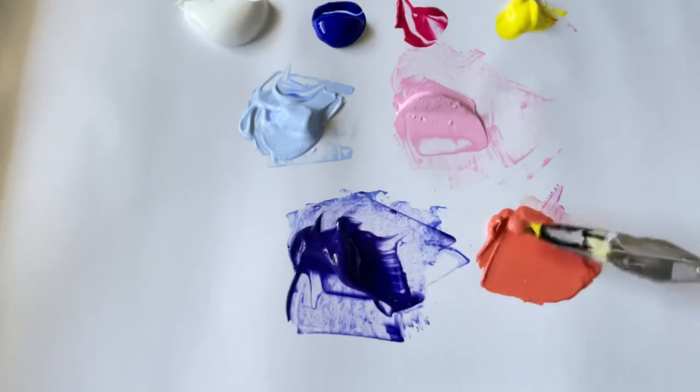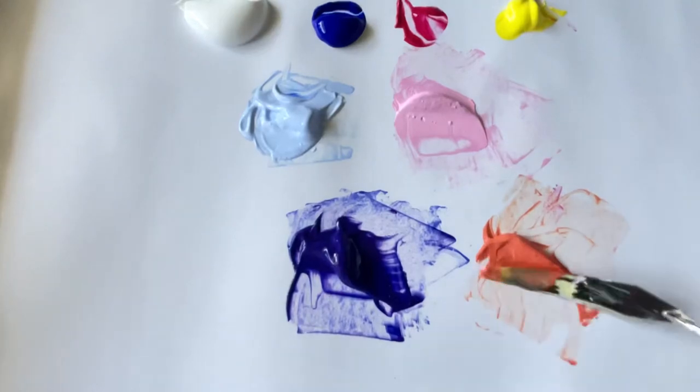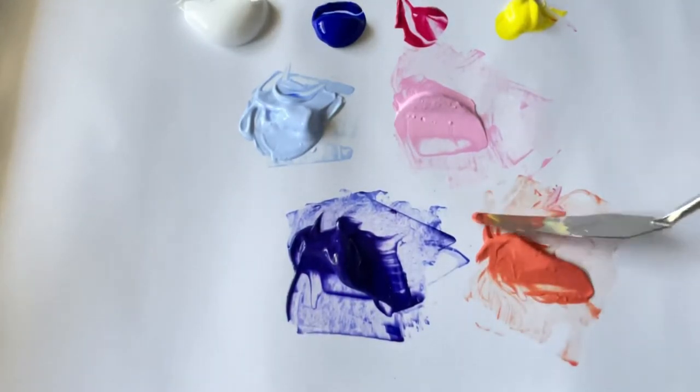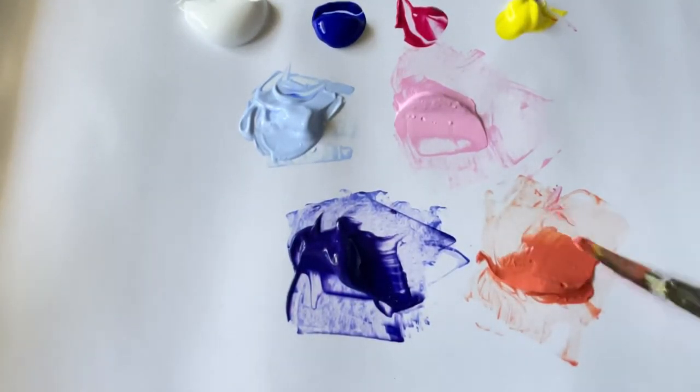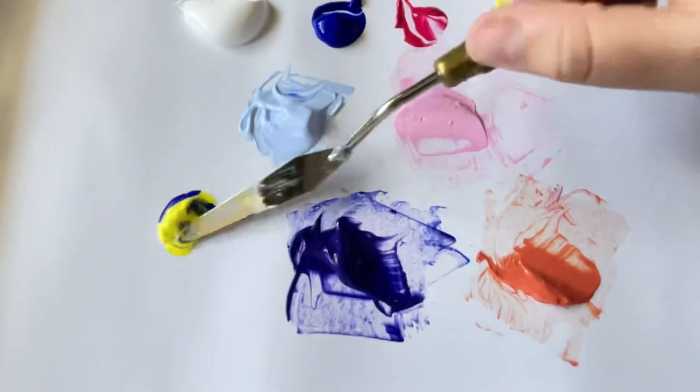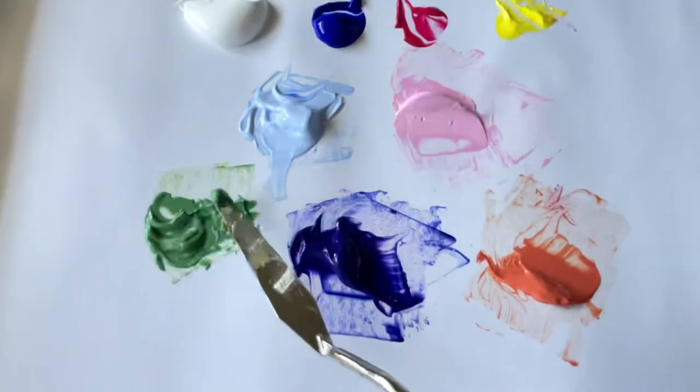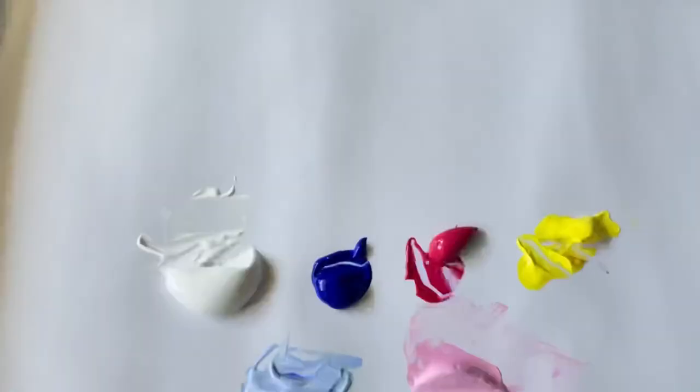Now I'm mixing a rust color or an orange color just by using a little bit of red and a lot of the yellow. Now to be specific, I'm using a permanent rose color, but I would recommend using a quinacridone red, and I'm using cadmium yellow. And now I'm going to mix some green using some cadmium yellow and some of that blue.